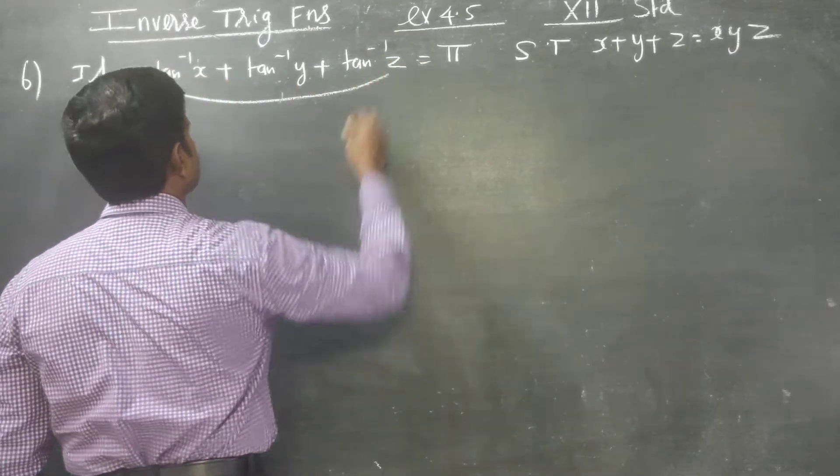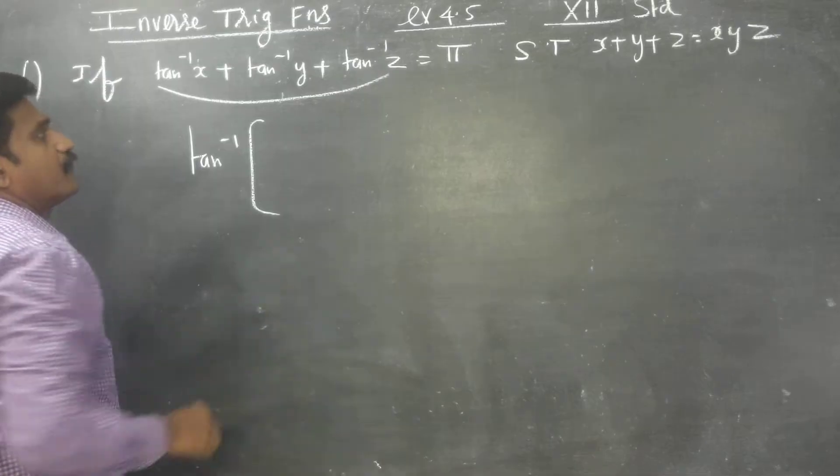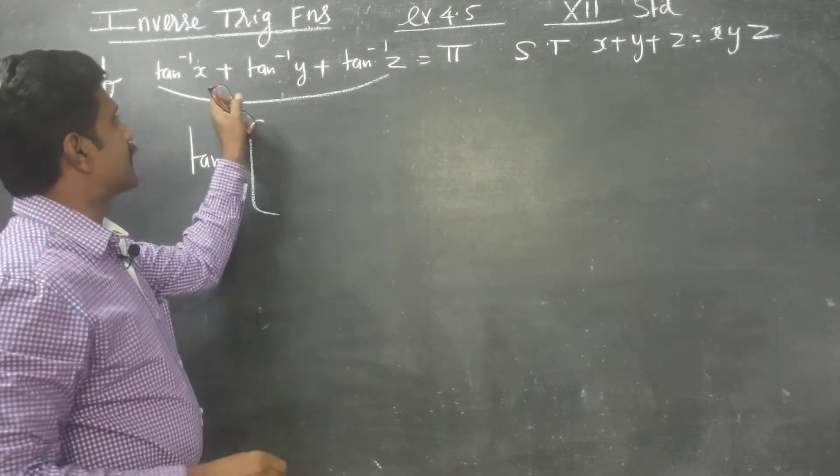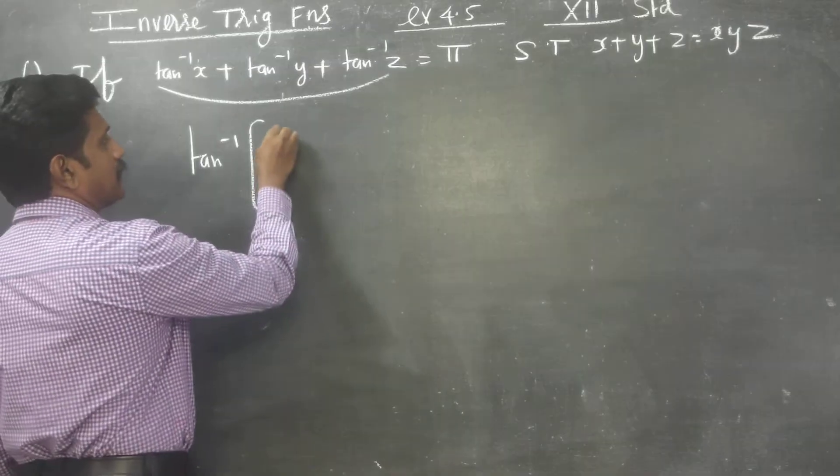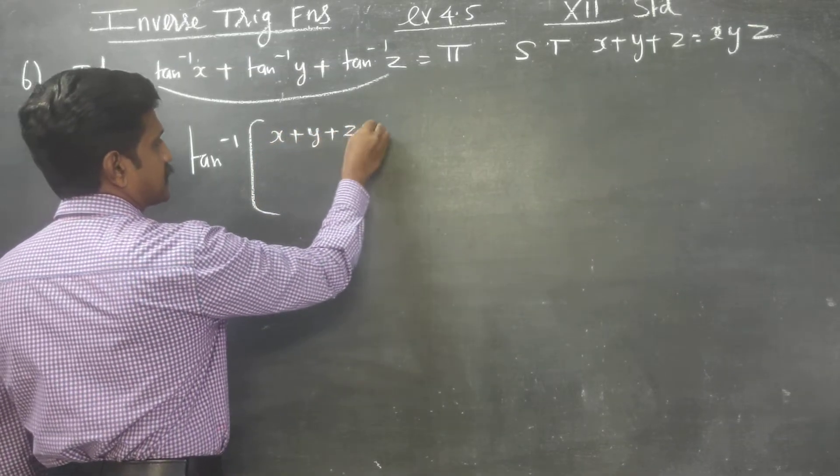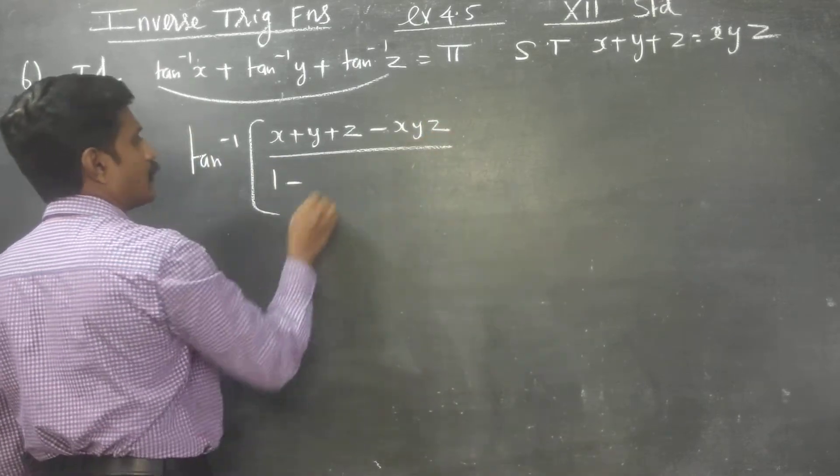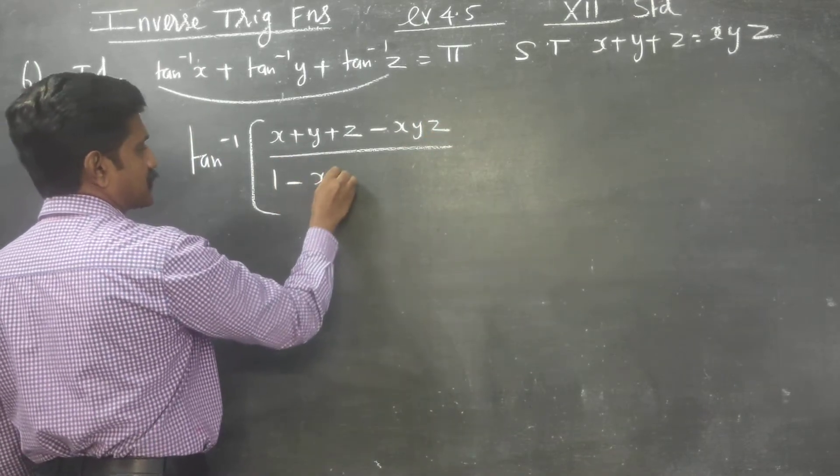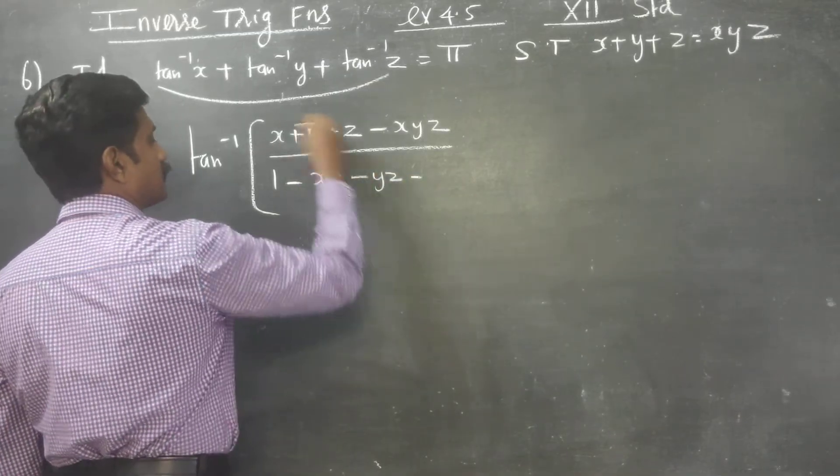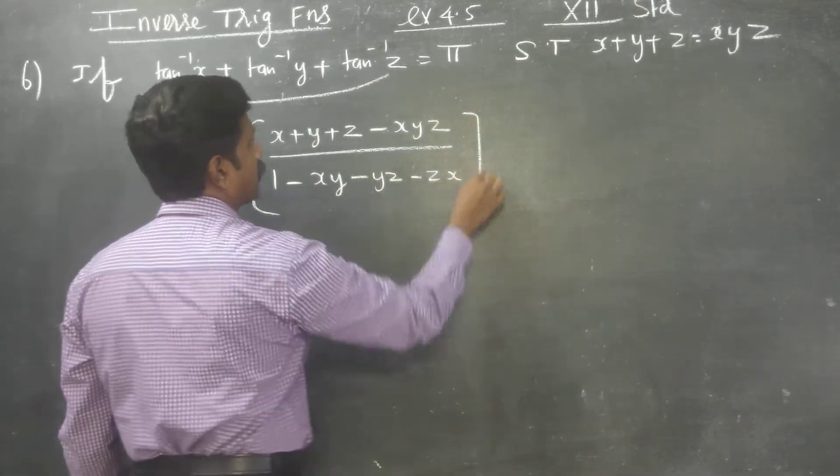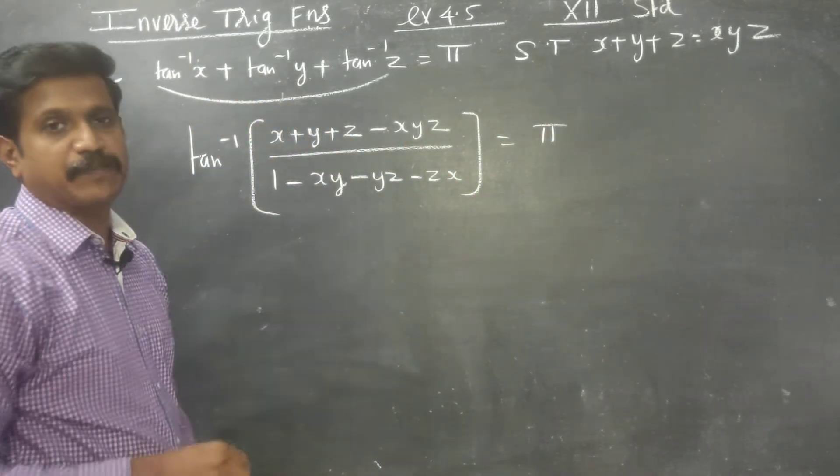There is a ready-made deduction for this. Tan inverse of three variables x, y, z - your answer will be x plus y plus z minus xyz divided by 1 minus the first term xy, another term yz, and another term zx. This is a ready-made formula for tan inverse of x plus tan inverse of y plus tan inverse of z.